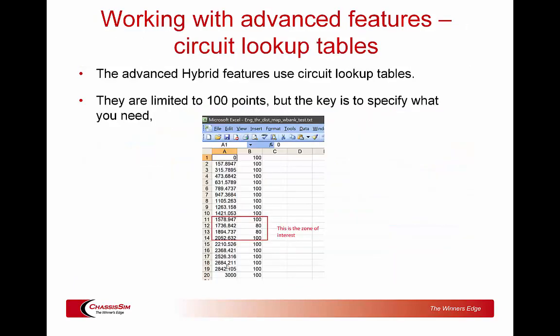Before we take a more in-depth look at the ChassisSim hybrid features, I want to make a quick note about some of the more advanced hybrid features. In particular, you're going to be using distance versus parameter maps for a particular circuit. Typically, you'll have distance as your first column in meters, and whatever parameter you need in the second column — whether that's applied throttle or the amount of hybrid you want to discharge over the lap in kilowatts. One trap for new users: they'll get a large file and take 7,000 points. It doesn't work that way — you are limited to 100 points, and quite frankly, that's all you really need.